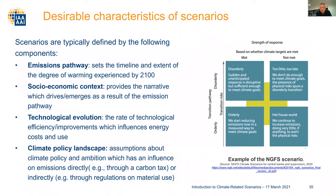An important concept is the orderly versus disorderly transition. In an orderly transition, things are done with good planning over time. But there is also the possibility of a disorderly transition where we do nothing until 2030 or 2035 and then have to abruptly shift to a much more draconian reduction of emissions to hit targets. We also have to consider not only the orderly versus disorderly dimension, but also what happens if we do or do not hit our targets. It's important as actuaries that you consider the interaction between various components of a scenario — the emissions pathway will then interact with the socioeconomic context of various countries and economies.